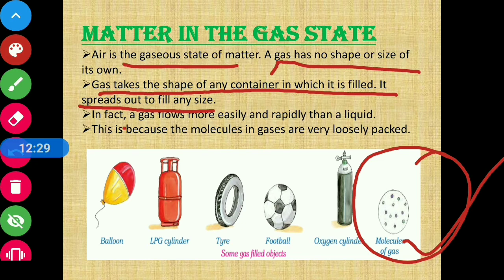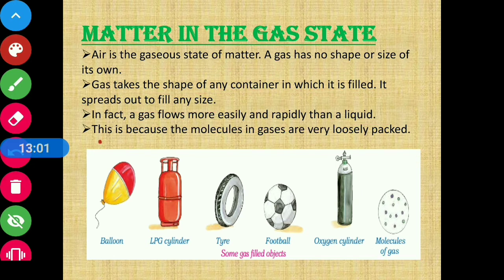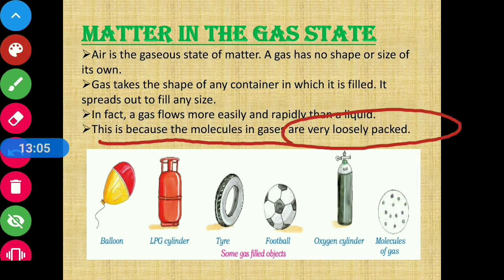In fact, a gas flows more easily and rapidly than a liquid. The flowing tendency of gas is greater than that of liquid because gas molecules are even farther apart than liquid molecules — they have even more space to move, so they can move and flow very easily. The molecules in gas are very loosely packed. In solids, molecules are tightly packed; in liquids, they are loosely packed; but in gas, they are very loosely packed. So gas molecules can easily change shape, size, and flow freely.